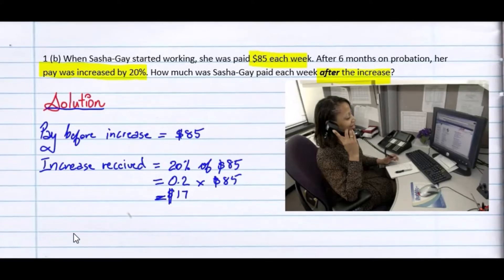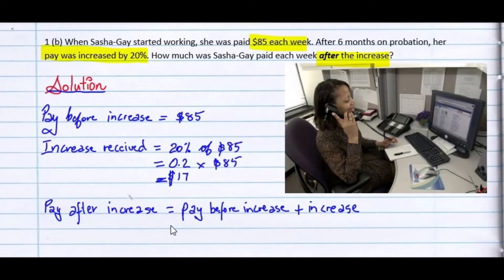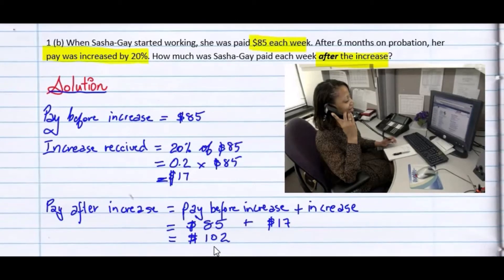So the increase is $17. Therefore, the pay after the increase will be equal to the pay before increase plus the increase. The pay before the increase was $85 plus the increase of $17, to give us a total of $102. Therefore, the pay after the increase is $102.